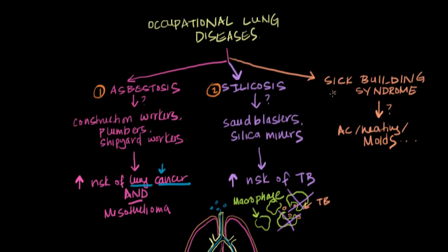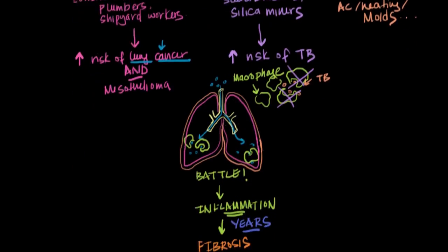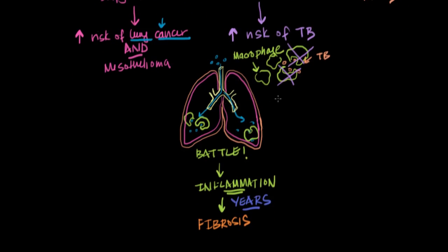So in asbestosis, silicosis, and sick building syndrome, you end up with scarring and fibrosis of the lungs. Keep in mind that these are only three of the many types of occupational lung diseases, and fibrosis is the common mechanism by which they ultimately cause disease.